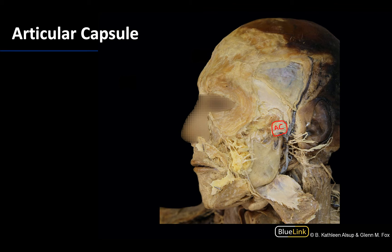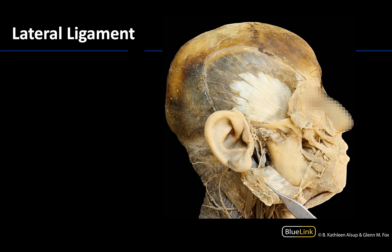While the capsule is still present and not dissected away like we have in this particular image, you will not be able to see the articular disc, and you will also not be able to see the articulating bones, which in the case of the TMJ are the mandibular condyle and the fossa. Now it is very difficult to distinguish the articular capsule from the lateral ligament, and sometimes the lateral ligament is referred to as the TMJ ligament. The articular capsule and the lateral ligament are very closely related.